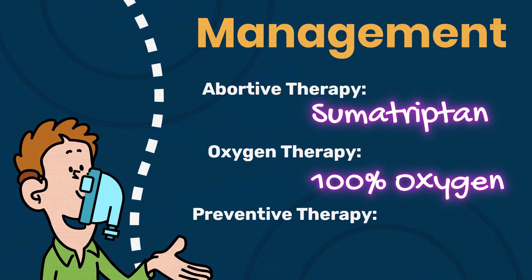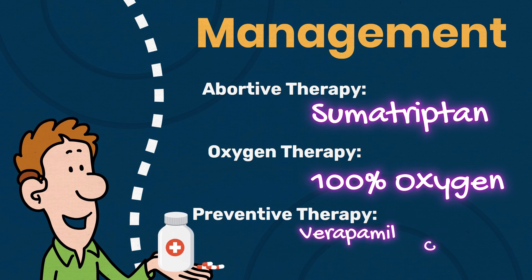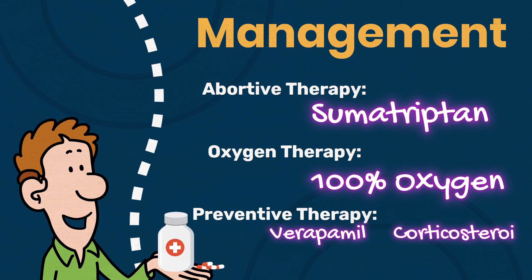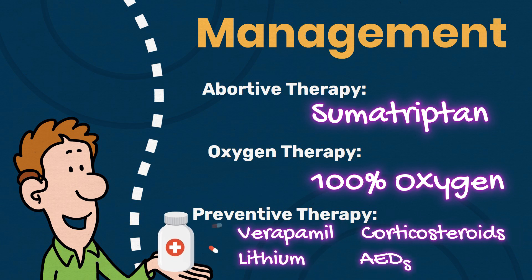Preventive medications are taken on a daily basis to reduce the frequency and severity of cluster headaches, such as verapamil, corticosteroids, lithium, and anti-seizure medications such as valproate and topiramate. Occipital nerve stimulation and surgical procedures may be considered for refractory cases.